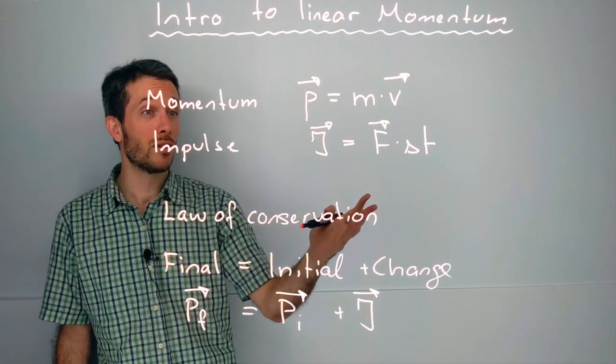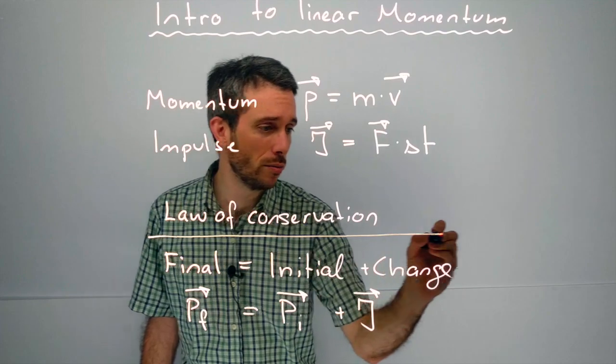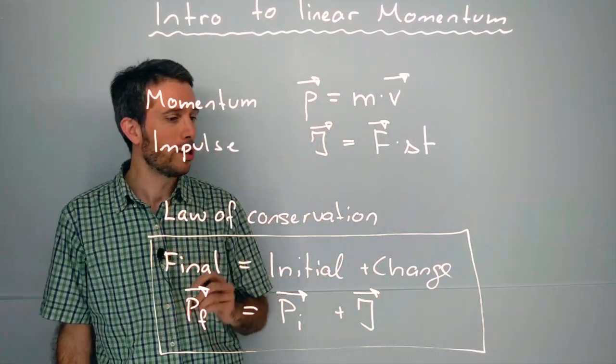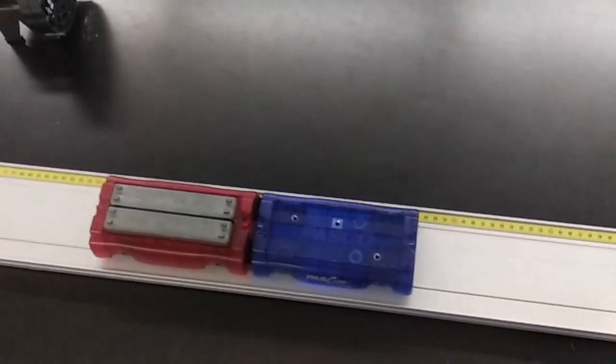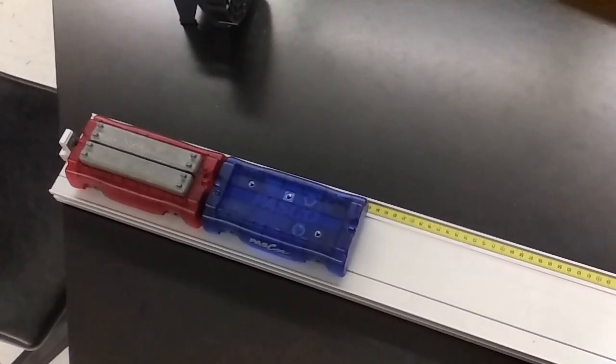And that's the basics of conservation of linear momentum. What is it usually used for? It's used for collisions or explosions. I'm going to do more videos on that a bit later on.